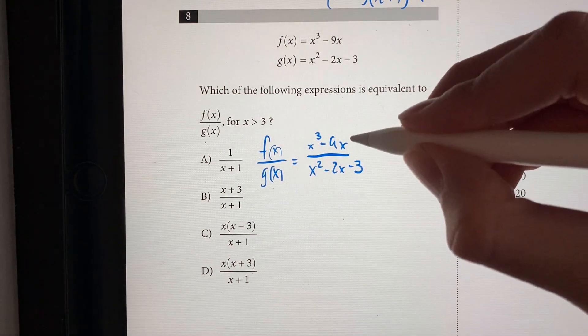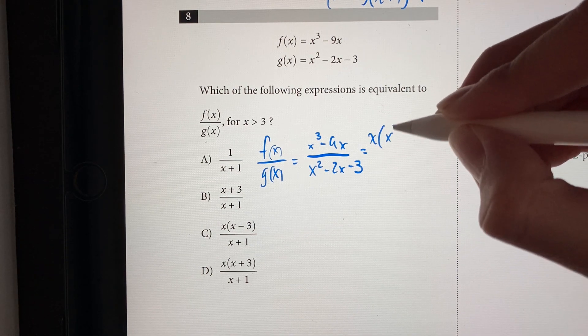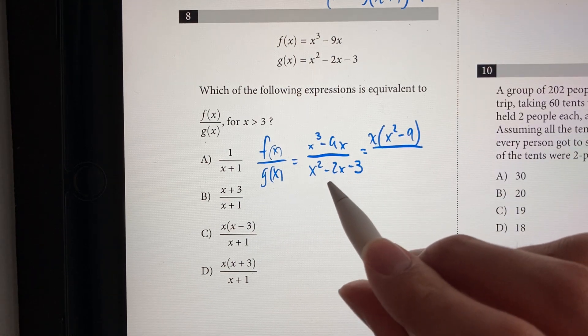The first thing I'm going to do is factor out an x from the numerator. So we get x times x squared minus 9. And in the denominator, I'm just going to factor this out.